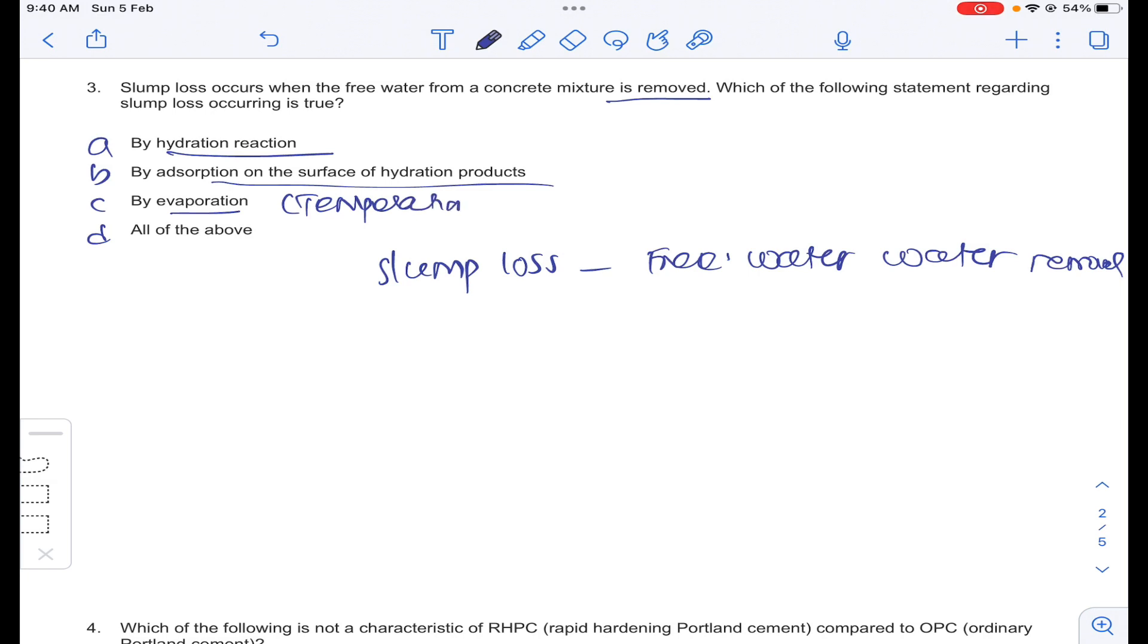When temperature is more, evaporation is more. Because of all these reasons, free water will be removed. Whenever the free water will be removed from the concrete, slump loss will occur. Answer D for question number 3.